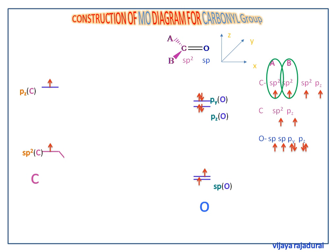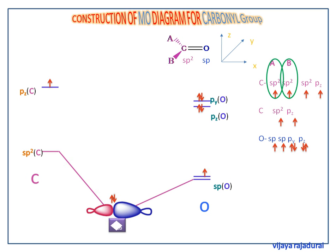The sp2 hybridized carbon overlapping with the sp hybridized orbital of oxygen forms the sigma CO bonding molecular orbital and the sigma-star CO anti-bonding molecular orbital.